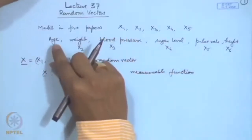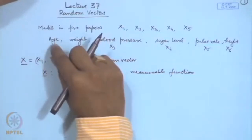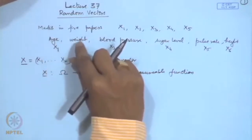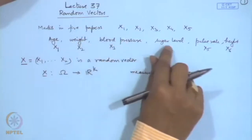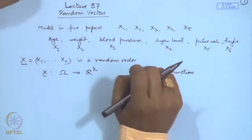For example, when recording age, it may be recorded in rounded years — in that case it will be a discrete random variable. Weight may be recorded as a continuous variable, and blood pressure, sugar level, etc. may also be continuous. So it could be that some components of the random vector are discrete and some are continuous, or all discrete or all continuous.